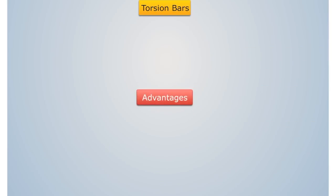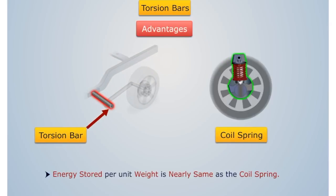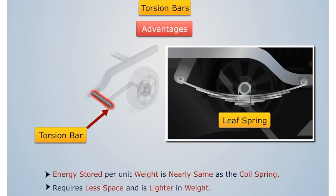Now, let's discuss the advantages of the torsion bar. The amount of energy stored by unit weight of the torsion bar is nearly the same as the coil spring. It is also lighter and more compact than the leaf spring.